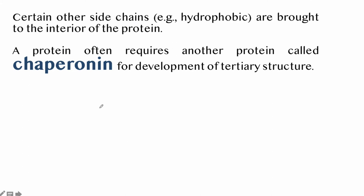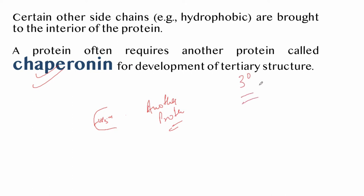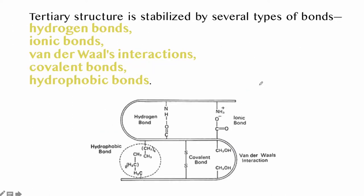Certain side chains are brought to the interior of the protein. A protein often requires another protein known as chaperones for the development of tertiary structure. The bonds that stabilize the tertiary structure are: hydrogen bonds, ionic bonds, van der Waals interactions, covalent bonds, and hydrophobic bonds.